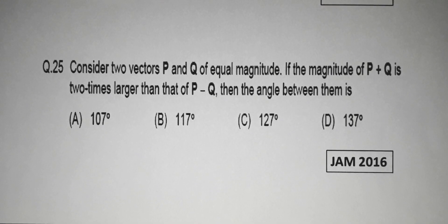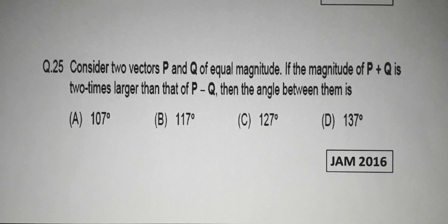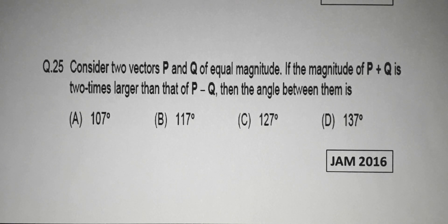Question number 25 gives: consider two vectors P and Q of equal magnitude. If the magnitude of P vector plus Q vector is two times larger than that of P vector minus Q vector, then the angle between them is: option A, 107 degrees; option B, 117 degrees; option C, 127 degrees; and option D, 137 degrees.